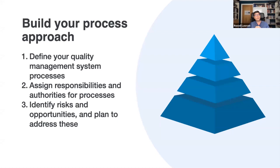When building your process approach, there are three key things to do. First, define your QMS processes. ISO 9001 does not provide you with a list of core processes you have to include — you need to determine these yourself. Examples might include manufacturing processes, design processes, distribution processes, development processes, service delivery, and assembly. Then other support processes like quality assurance, new customer onboarding, equipment management, supplier approval and evaluation, and risk identification and management.